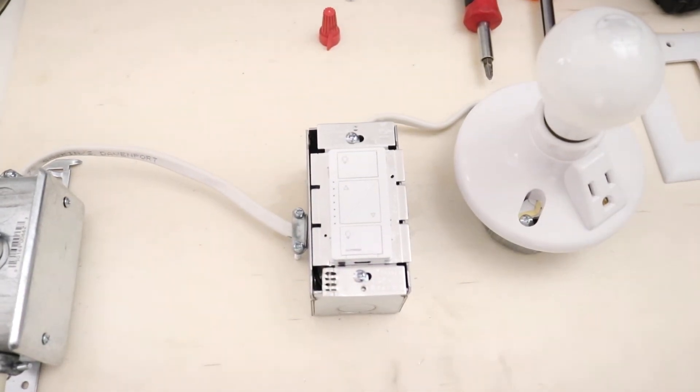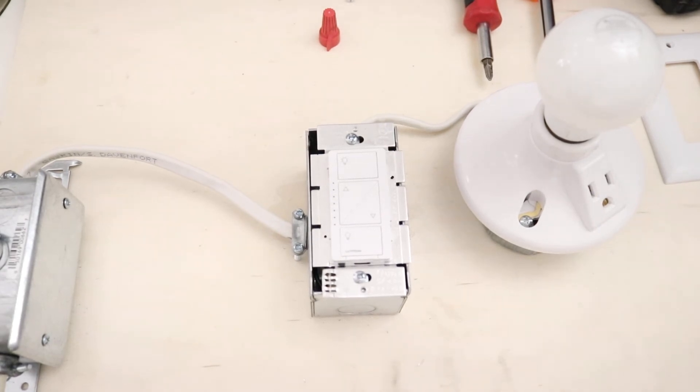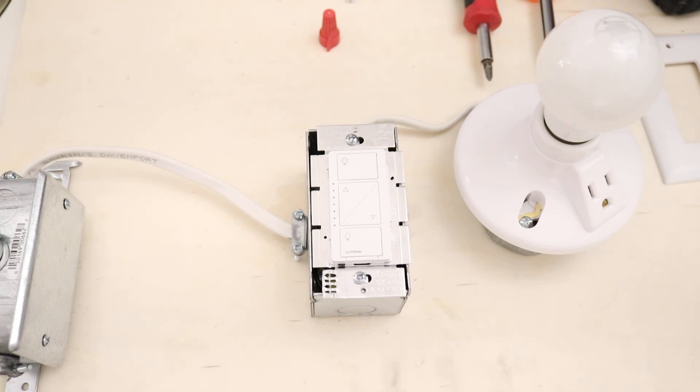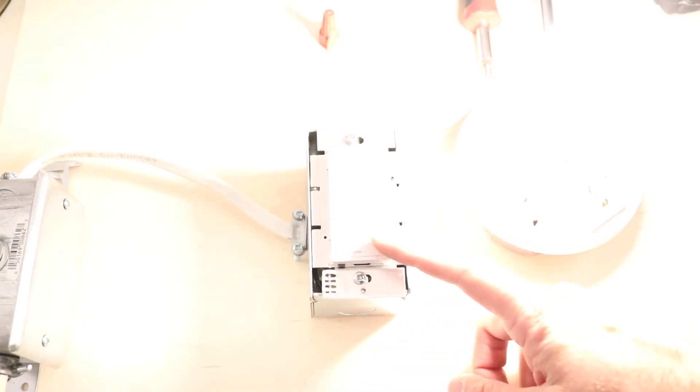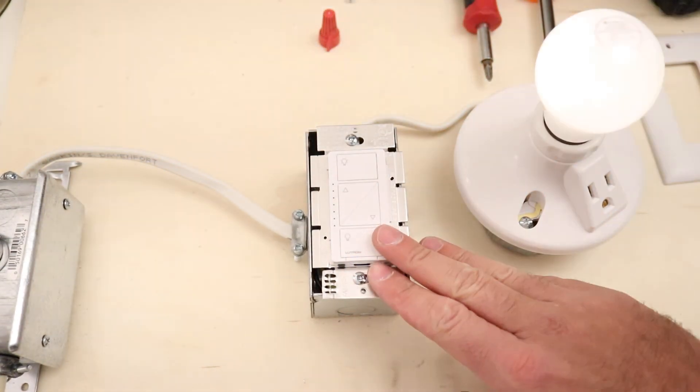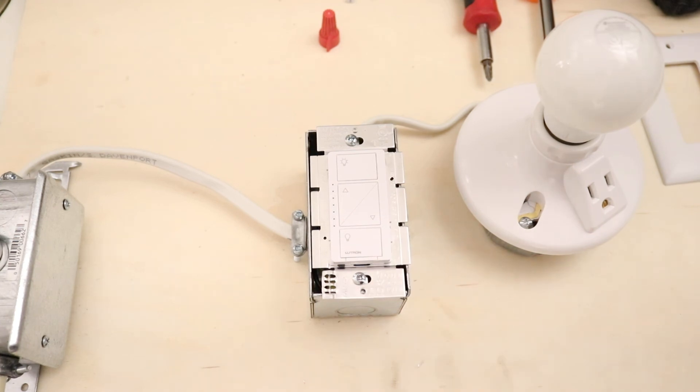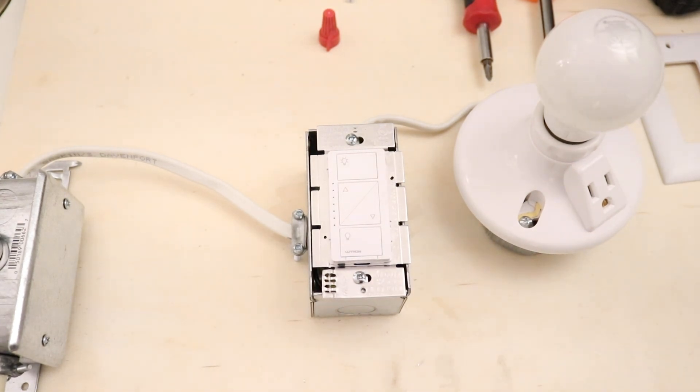I'm going to apply the power and then this should light up. So just going over to apply the power back to this light switch. And now there we go. We've got our Lutron Caseta dimmer switch installed. That is how you wire up a Lutron Caseta dimmer switch. Thank you for watching and we'll see you next time.